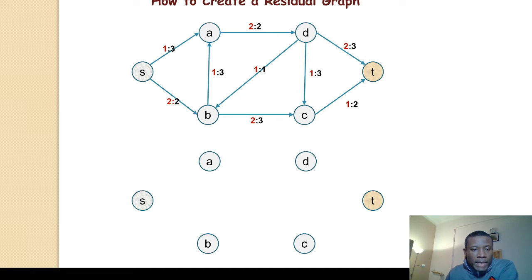I'm adding a forward edge of 2 because you can push 2 more across. These numbers are not flows but are called residual capacity. We add a backward edge of 1, meaning we can undo the existing 1.